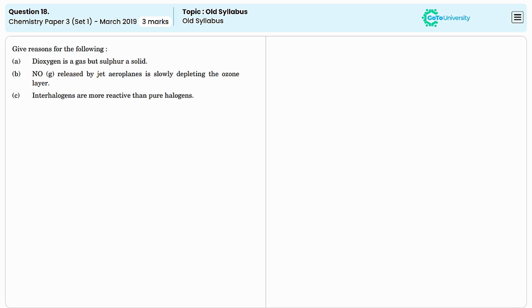In this question, we have to provide the reasons for the given statements. The first one is, dioxygen is a gas but sulphur is a solid.